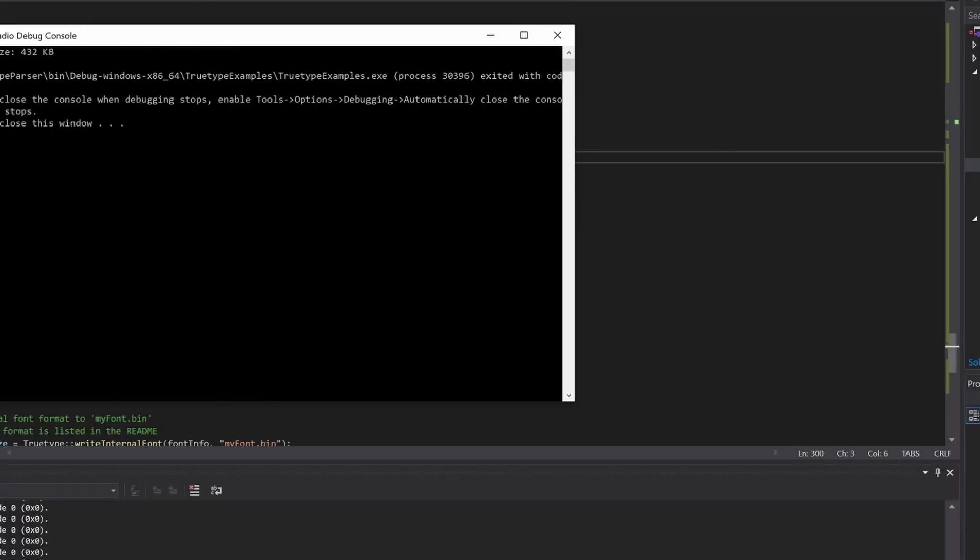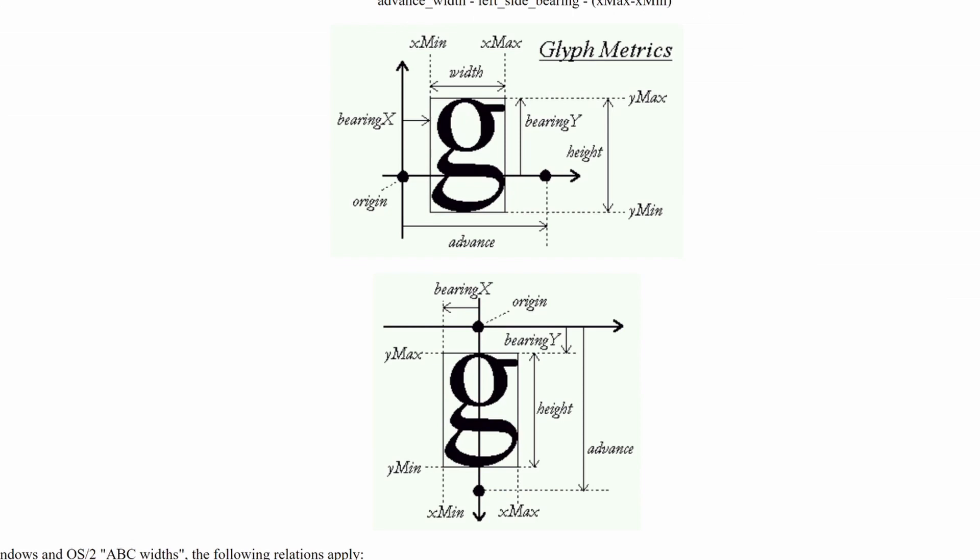We'll also be looking at the different metrics involved with font rendering. You can see here a website — it's a bit old but has useful information on fonts. There's a ton of different things we have to learn about fonts in order to render them correctly, including things like kerning and the vertical and horizontal placement of glyphs to make sure everything spaces out correctly and looks right when rendered to the screen.